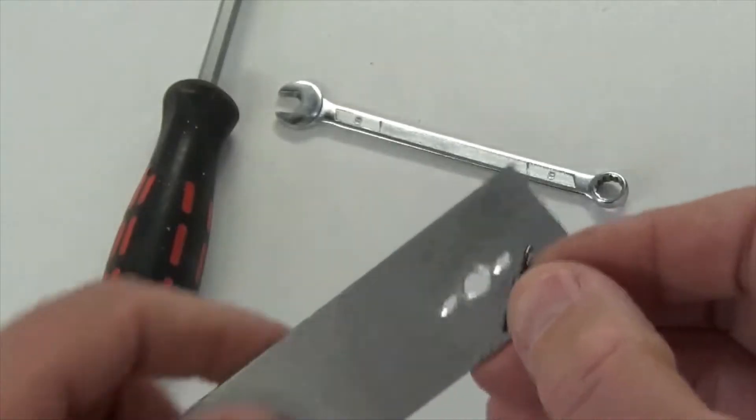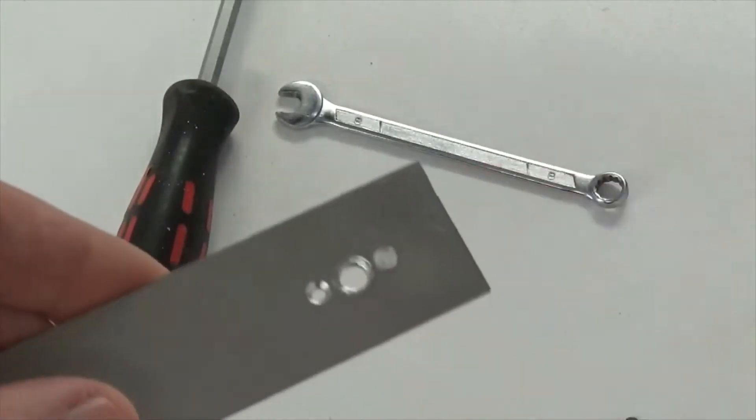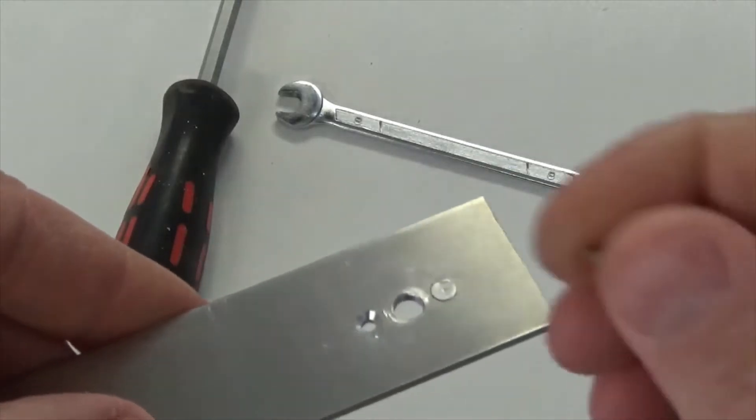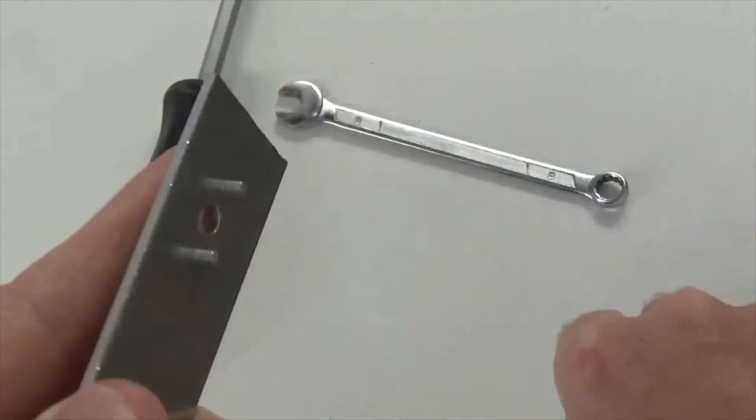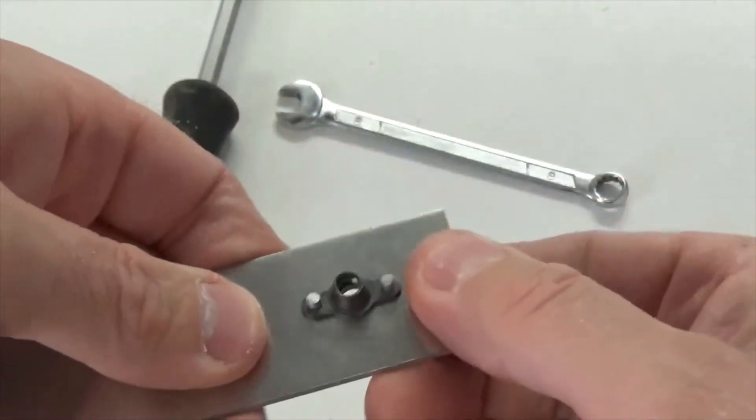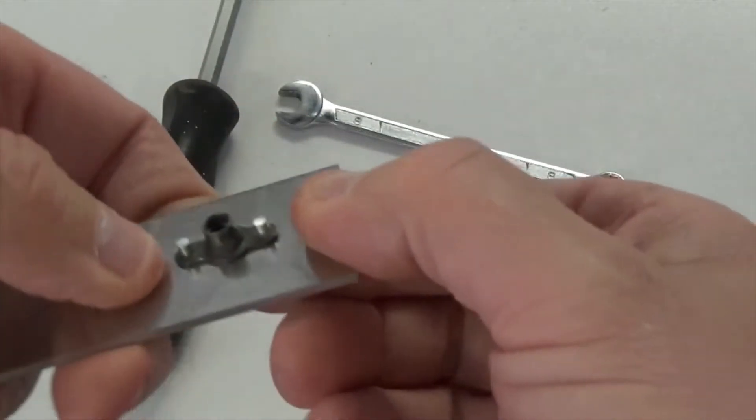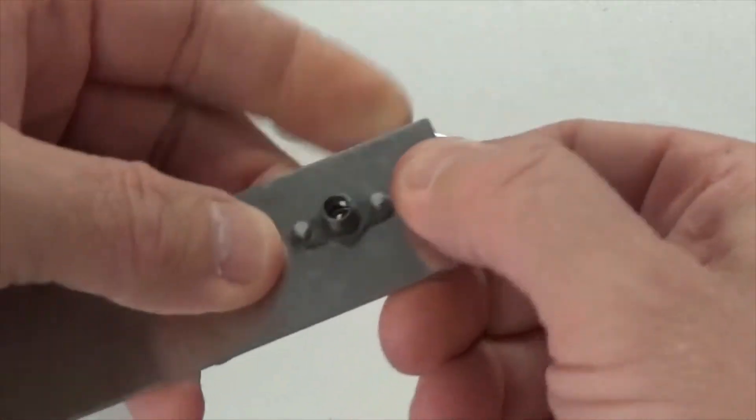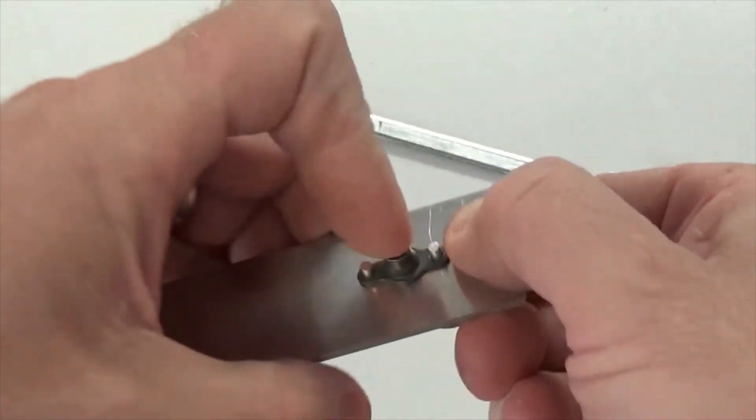So ordinarily what you do is you get your two rivets, one, two, and then you put your anchor nut over, and then you have to hold it all together while you're trying either to use a hammer and punch or a rivet gun or some rivet squeezes. And it can be quite fiddly,